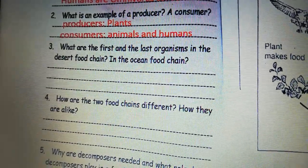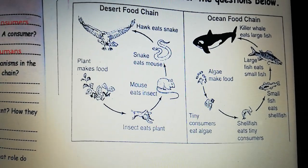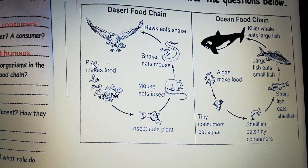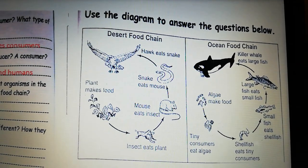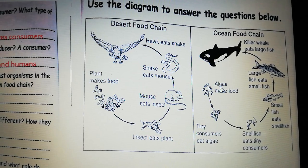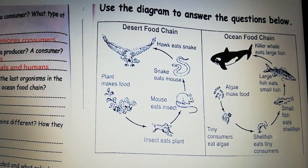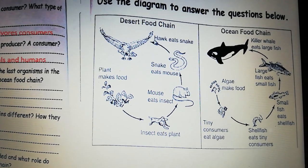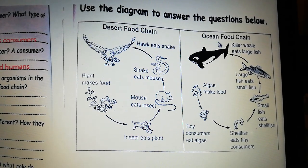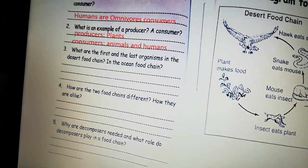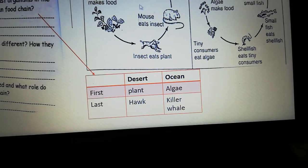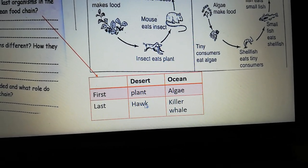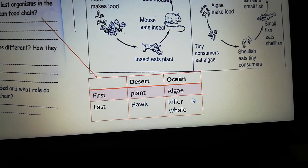What are the first and the last organism in the desert food chain and in the ocean food chain? If we look at both food chains, the food chain always starts with a producer. In the desert food chain it starts with a plant, and in the ocean food chain it starts with algae. The last organism in the desert food chain is the hawk, and the last organism in the ocean food chain is the killer whale.